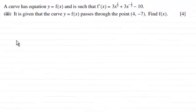Hi there. Now for this part of the question we're given that the curve has an equation y equals f of x and is such that f dash x or f prime x is equal to 3x to the power half plus 3x to the power minus a half minus 10. And it is given that the curve y equals f of x passes through the point 4 minus 7. And we've got to find f of x for 4 marks.